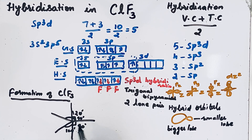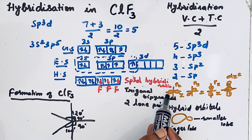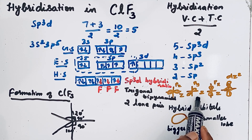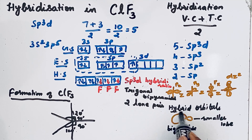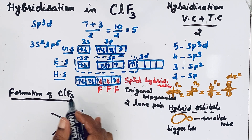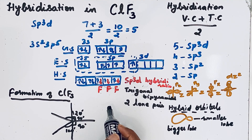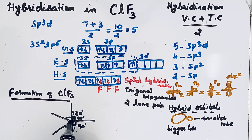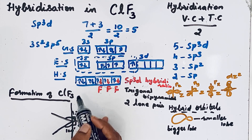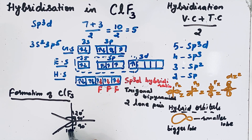In sp3d hybridization, the pz, py, px, and dz² orbitals all intermix to give hybrid orbitals. The shape of each hybrid orbital has a bigger lobe and a smaller lobe. Since CLF3 contains two lone pairs, we need to decide where these lone pairs are placed — in the equatorial position at 120° or the axial position at 90°.